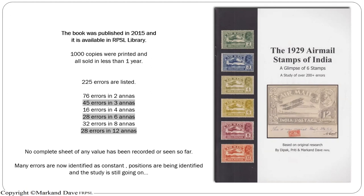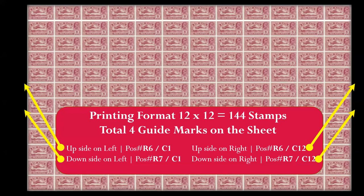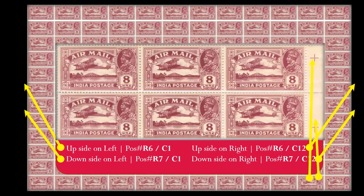This is the position we will now examine. In the absence of a complete sheet — I've tried my best to find complete sheets of any value but have been searching for 15 years without finding a single one — this is just a digital reproduction of how the sheet would look. The printing format was 12 by 12, total 144 stamps. On the right side we have two guide marks, and on the left side of the sheet two more guide marks in the margin area. Here is how the guide marks look.